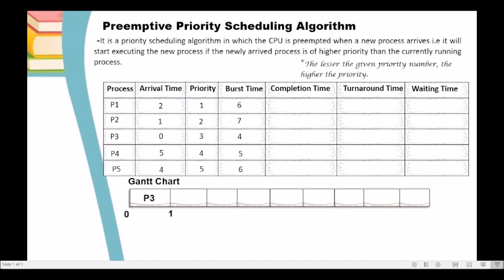At time 1, P2 arrives in the ready queue. We compare the priority of P2 and P3. The priority of P2 is 2, the priority of P3 is 3. P2 has higher priority than P3, so we are going to allocate the CPU to P2. In the Gantt chart, we have P2 here.